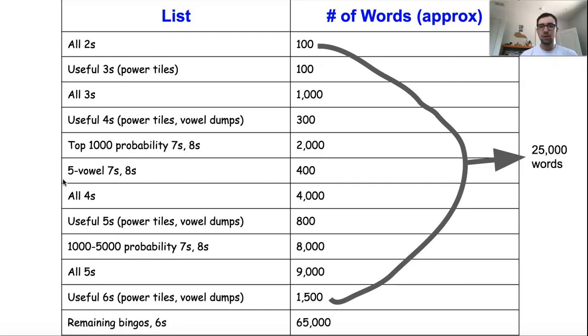So this here is the order I recommend. I always recommend that folks start with the twos as you can see there's only 100 of them, so it's not a particularly lengthy list to learn and they are so important to have down really solid before you move on to anything else.